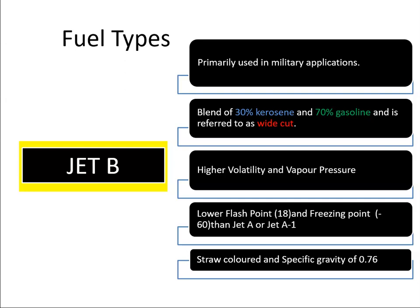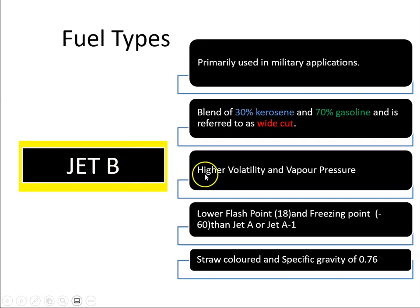Jet B is primarily used in military applications or in locations with very cold temperatures — Siberia, Alaska, Canada, the Antarctic. It is straw coloured with a specific gravity of 0.76. Its volatility and vapour pressure are higher than Jet A and Jet A1, primarily because of the gasoline content.